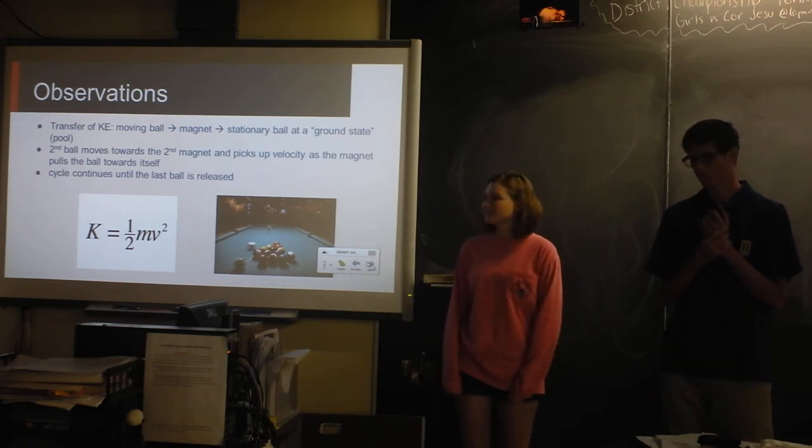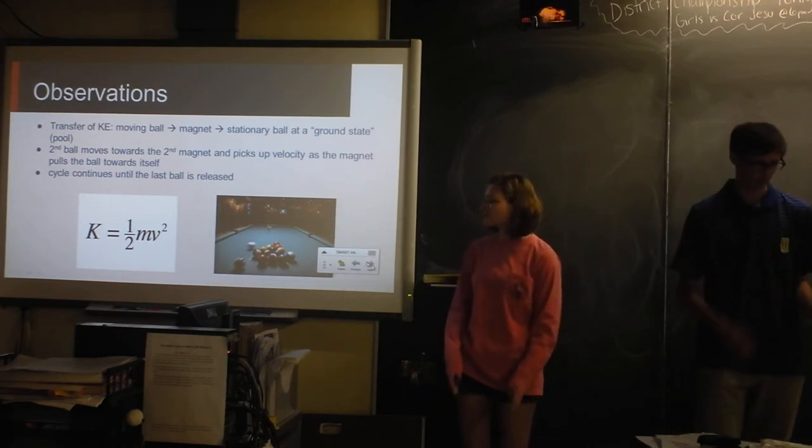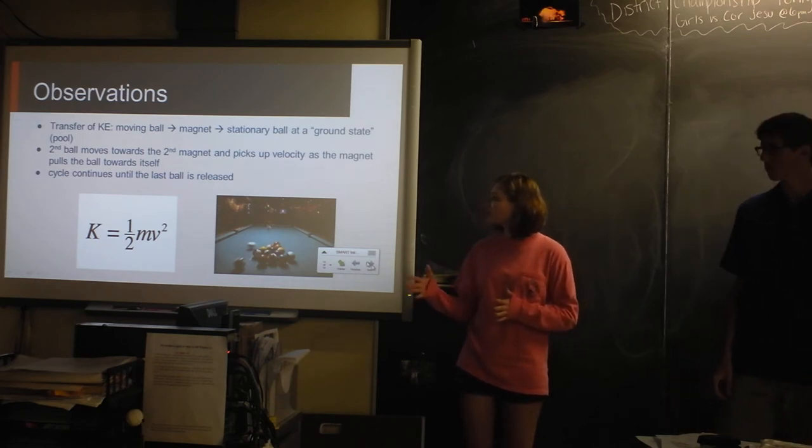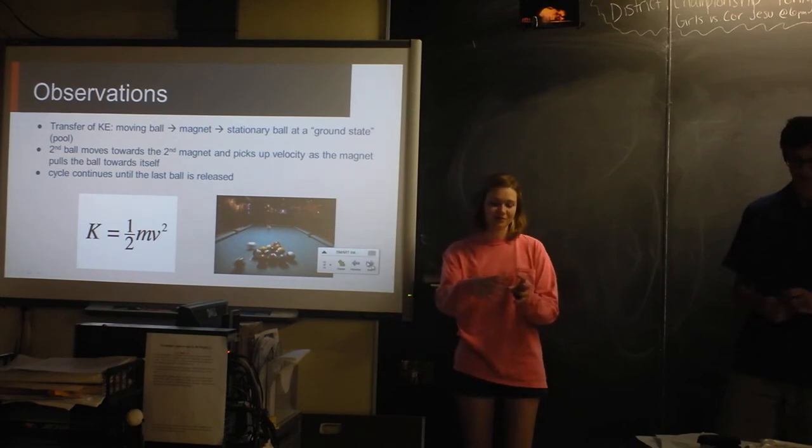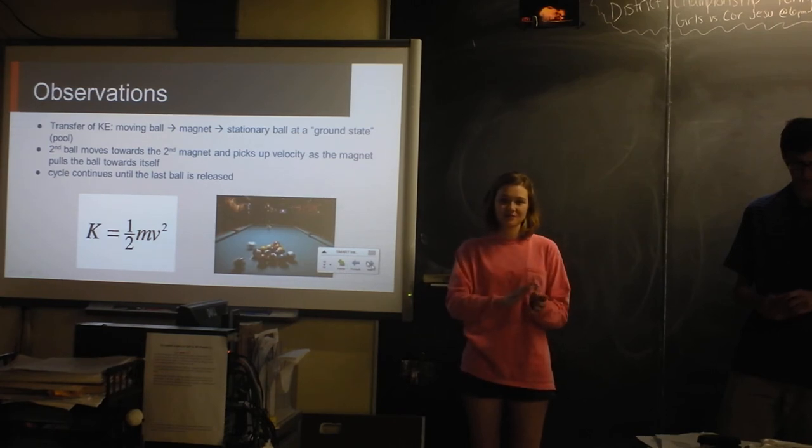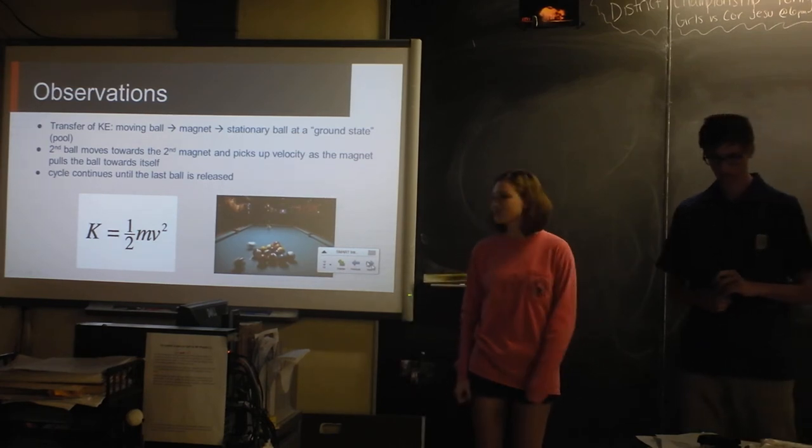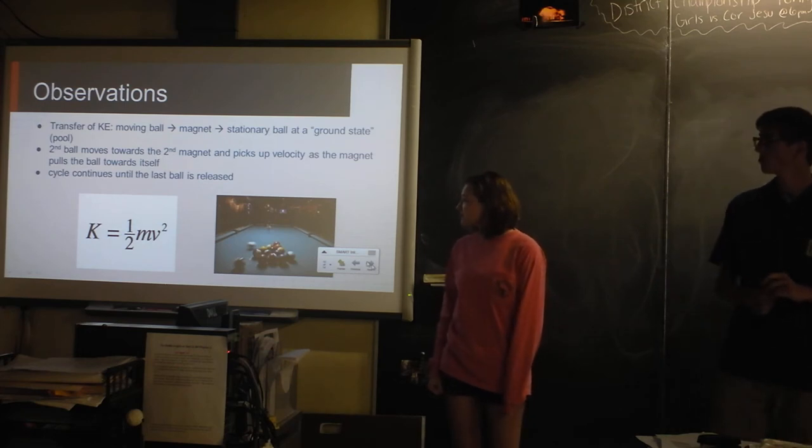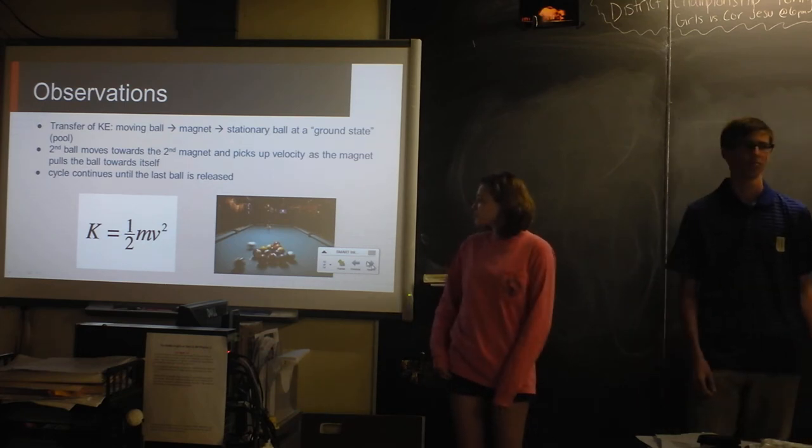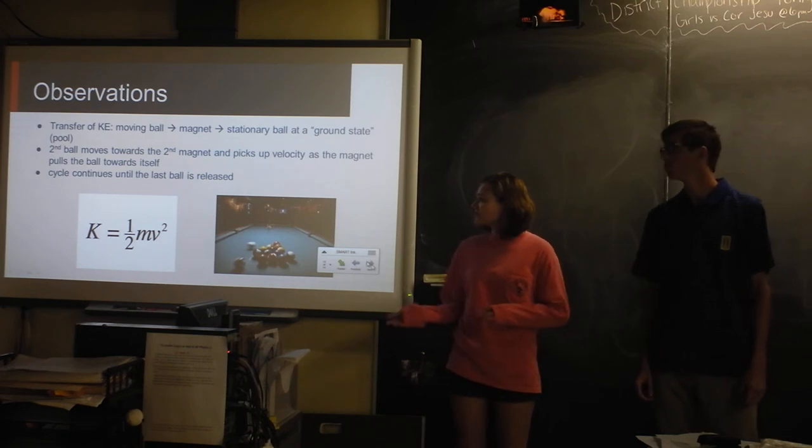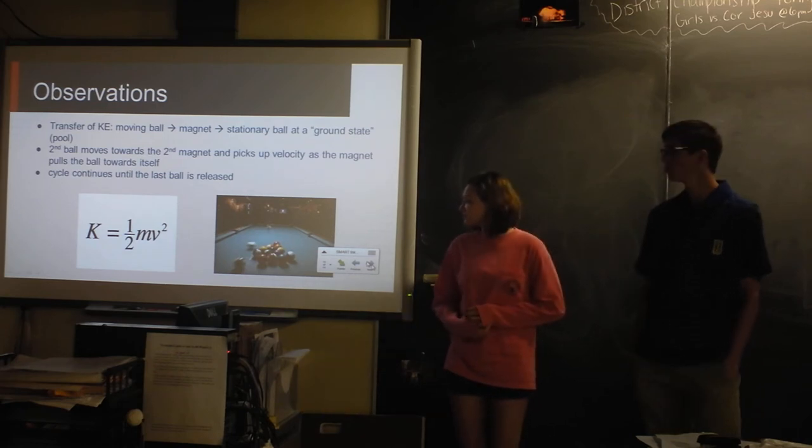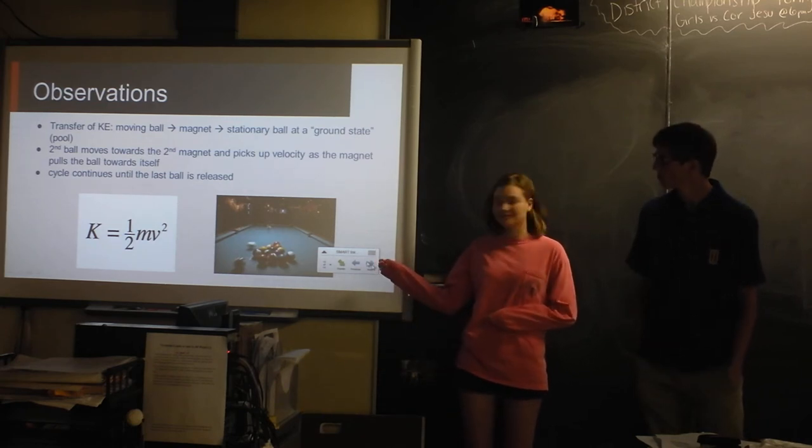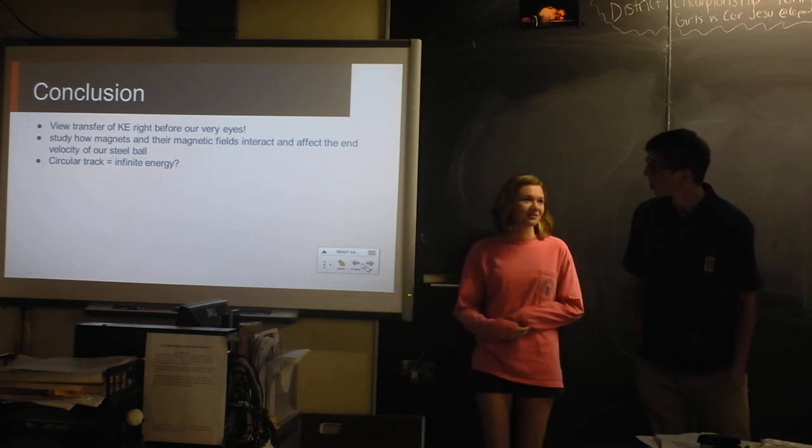And so this is kind of like what we observed. What's happening is the transfer of kinetic energy. So it goes from the moving ball to the magnet to the stationary ball that's at a ground state. It's kind of like somebody playing pool. If they're shooting the cue ball at two balls, they shoot it through the first ball, which stays still, and then the second ball will travel with the energy. The second ball moves towards the second magnet and picks up the velocity. And then the cycle continues for however many sets of magnets you have.